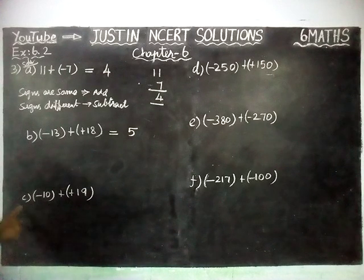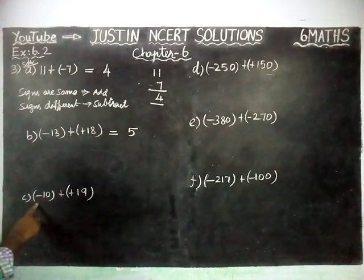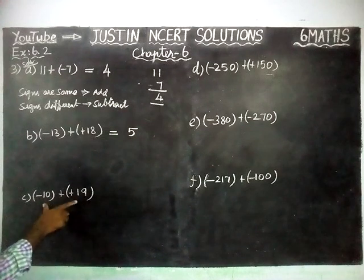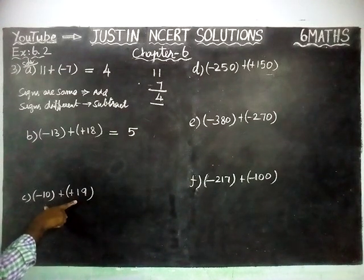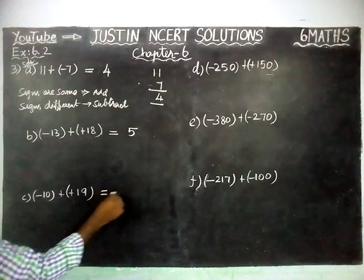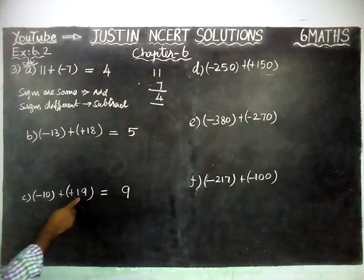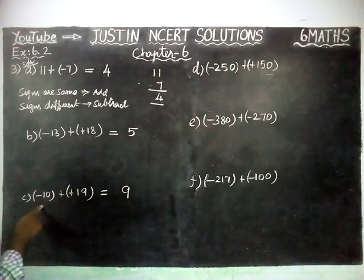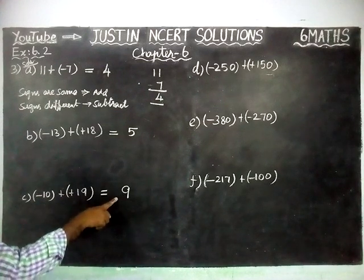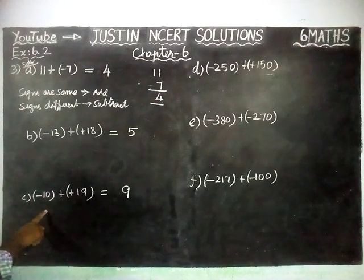Next, part C: minus 10 plus plus 19. Signs are different, so we have to find the difference. The difference between 19 and 10 is equal to 9. The greatest number is 19, and in front of 19 there is a plus sign. So, plus 9 is the answer for part C.